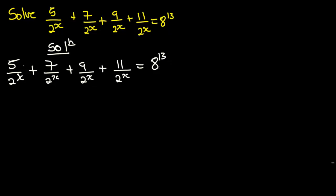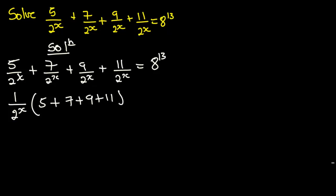Now look at the denominators very well — they are all the same. So I am going to factorize the denominators out, bringing 1 over 2 to the power x out, leaving 5 plus 7 plus 9 plus 11. And this will be equal to 8 to the power 13.